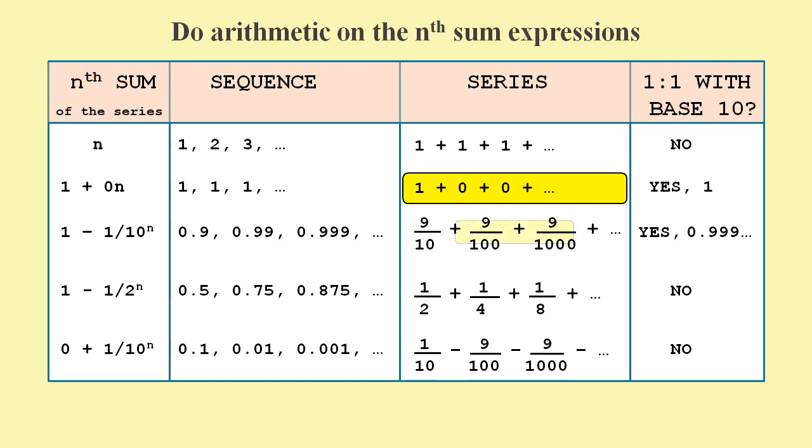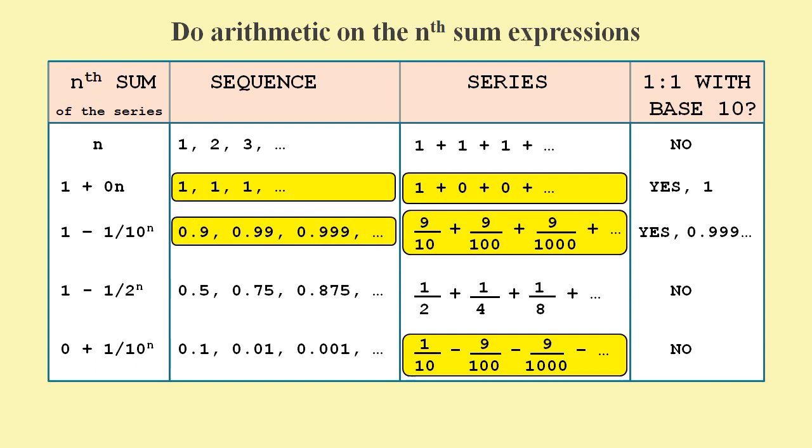Then, if we subtract the series for 0.9 recurring, we get a new series as the answer. Or we could treat 1 as a sequence, subtract the sequence for 0.9 recurring and get a new sequence as the answer. Perhaps the best approach is to work with the nth sum expressions. And when we do the subtraction, we get a result of 0 plus 1 over 10 to the power n. Unlike 1 and 0.9 recurring, this result can't be mapped to base 10 place values.